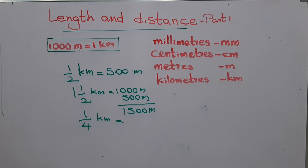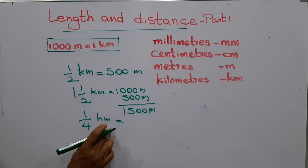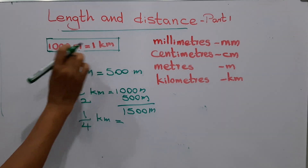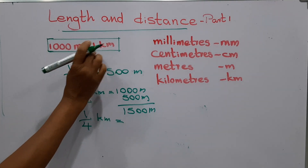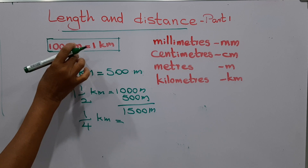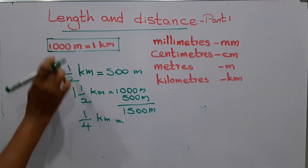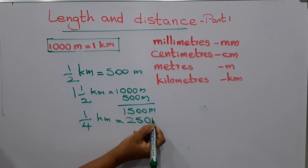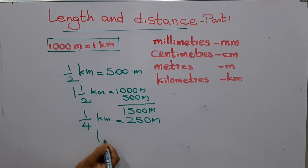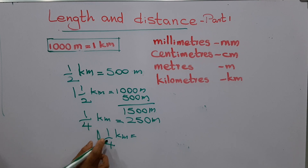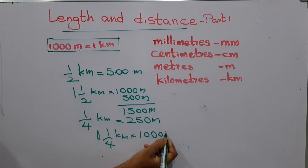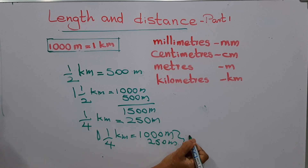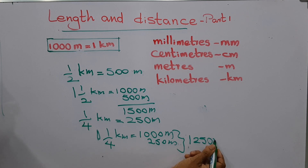My question is a quarter of a kilometer. One kilometer equals one thousand meters, so a quarter of one thousand meters is two hundred and fifty meters. One and a quarter kilometers means one thousand meters plus two hundred and fifty meters — total one thousand two hundred and fifty meters.